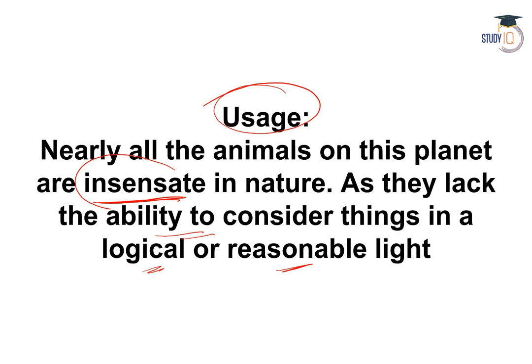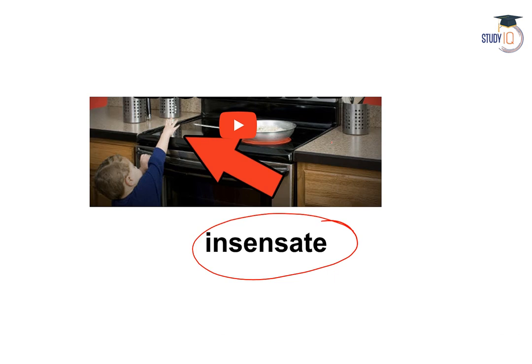Nearly all the animals on this planet are insensate — that means they do not follow any logic or reason, as they lack the ability to consider things in a logical or reasonable light. Adhiktar animals insensate hote hain. As we can see in this image, this is a clear example of insensate.